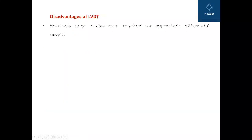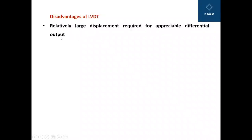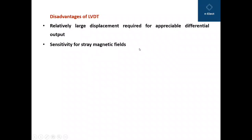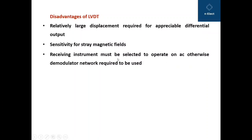LVDT is also associated with some disadvantages. First, a relatively large displacement is required for an appreciable differential output. Second, it is sensitive to stray magnetic fields — unwanted fields in the vicinity of the LVDT that may affect the differential output. Third, the receiving instrument must be selected to operate on AC; otherwise, a demodulator network is required, since LVDT output is AC.